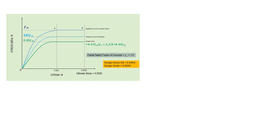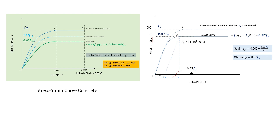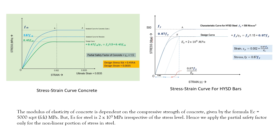When developing the design equation for steel reinforcement bars, the design strain is 0.002 + 0.87 FY / ES and the design stress is 0.87 FY. Comparing the stress-strain curves for concrete and steel: for concrete, the partial safety factor is applied at all stress levels because the modulus of elasticity of concrete (given by 5000 √FCK) is dependent on the characteristic compressive strength. For steel, however, the modulus of elasticity — 2 × 10⁵ MPa — is constant and not influenced by yield stress. Therefore, the partial safety factor for steel is applied only in the inelastic region, i.e., after point A dash.